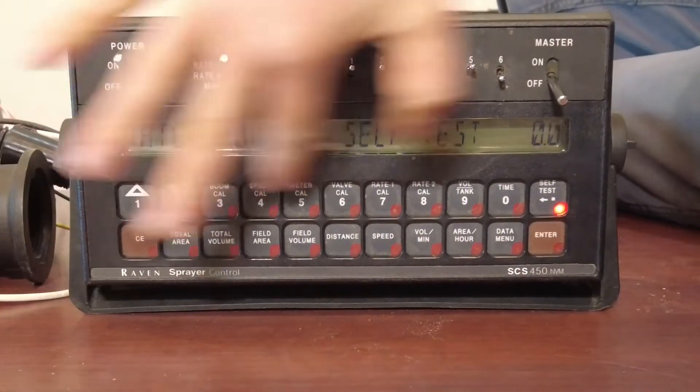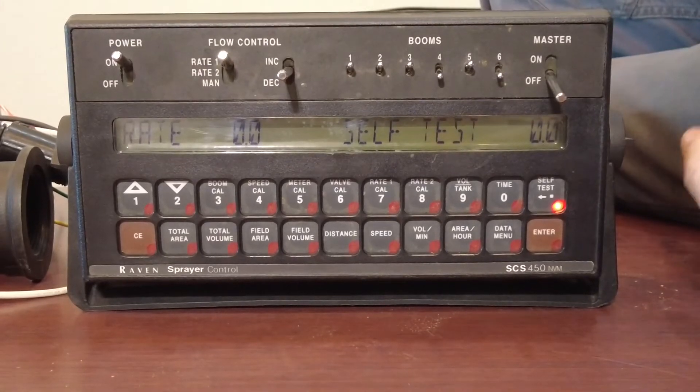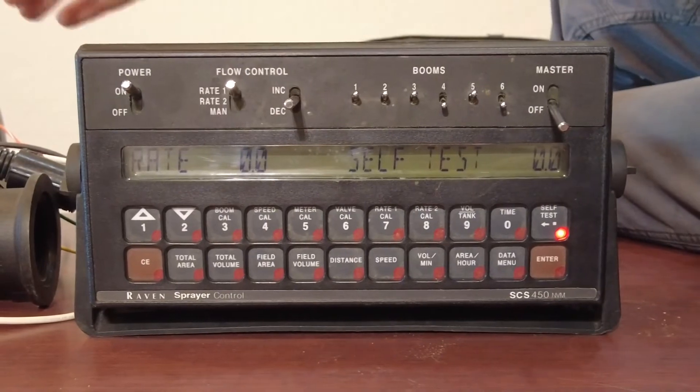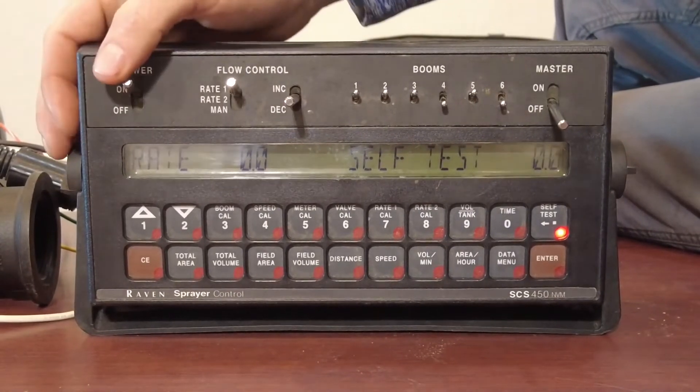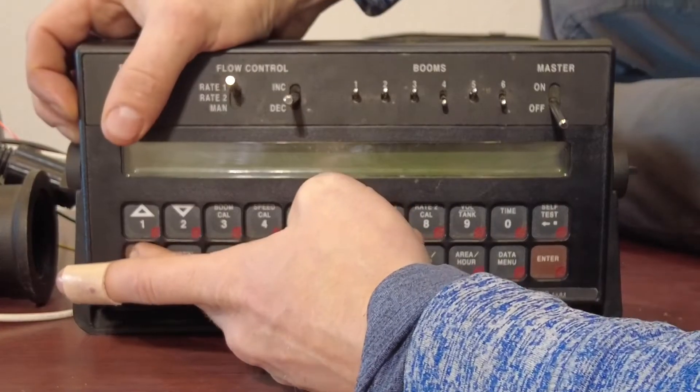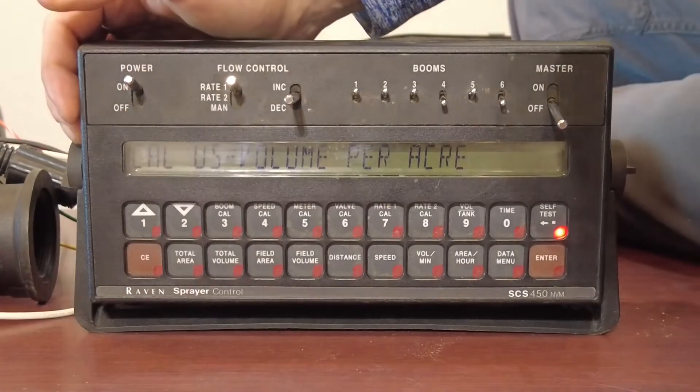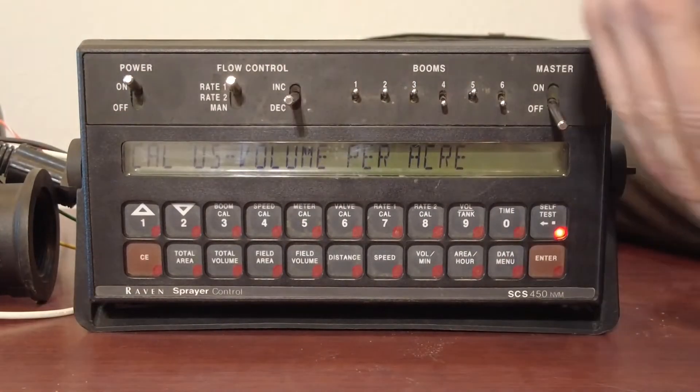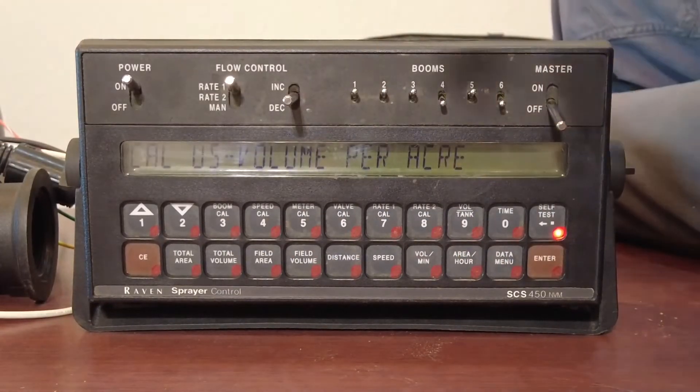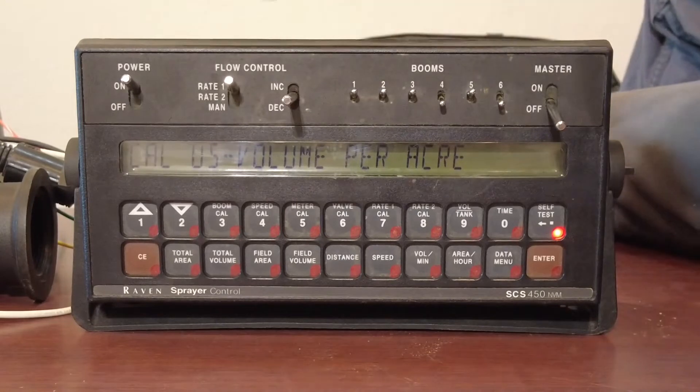Okay guys, so we're going to walk through the Raven 440 and how it works. In order to completely clear your Raven controller, you're going to turn it off. You're going to hold down on the CE button and turn it on at the same time. What we just did is we just cleared all of the settings and we started fresh on the backside settings.